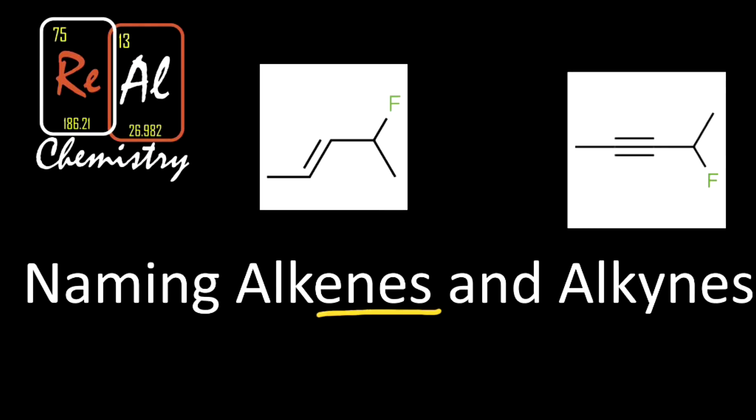Alkenes, when we see this E-N-E ending, tell us that we have a double bond, like we see up in this carbon molecule above. So they're basically alkanes, but they got a double bond. Meanwhile, alkynes — same basic thing, we have a change in the ending, Y-N-E, and it tells us there's a triple bond. So alkynes have triple bonds, alkenes have double bonds, and we're going to learn how to name them.